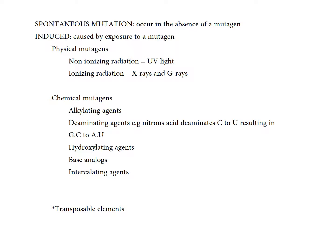Physical mutagens include non-ionizing radiation such as UV light, and ionizing radiation such as X-rays and gamma rays. Chemical mutagens include alkylating agents, which add methyl groups to bases and alter their pairing properties; deaminating agents like nitrous acid, which deaminates cytosine to uracil, converting a G-C pair to an A-U combination; hydroxylating agents; base analogues, which are chemical substances that mimic actual bases; and intercalating agents.